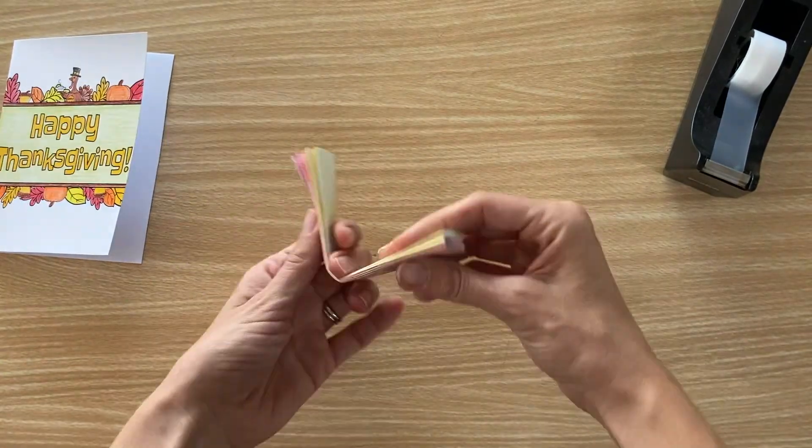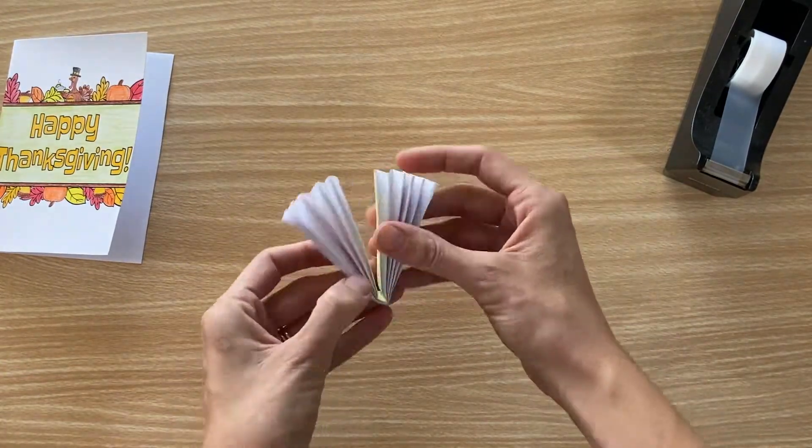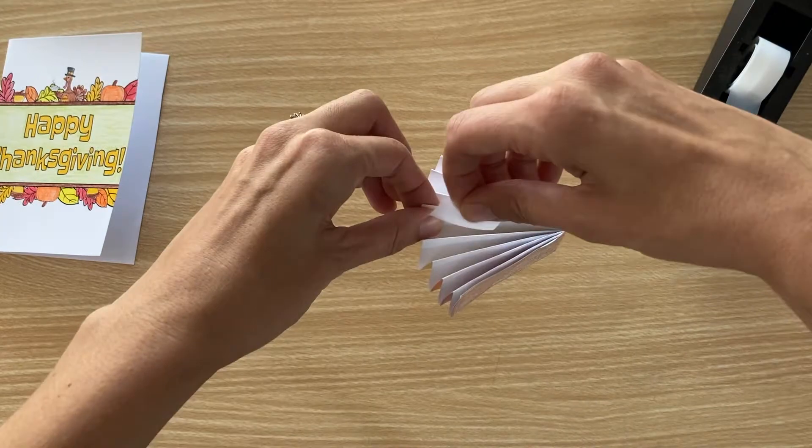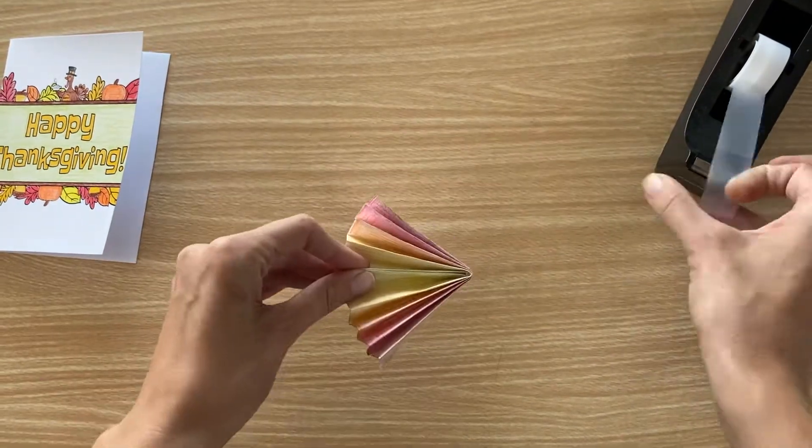Afterwards, fold the tail in half and tape the center feathers together to form a fan shape with the paper.